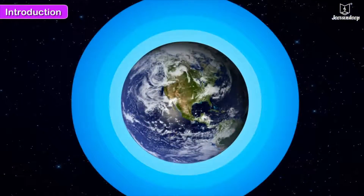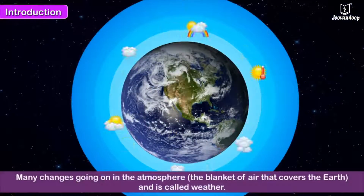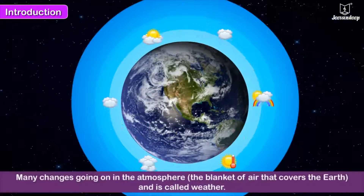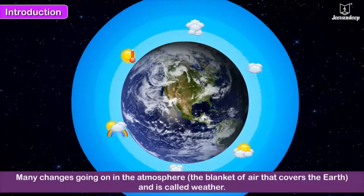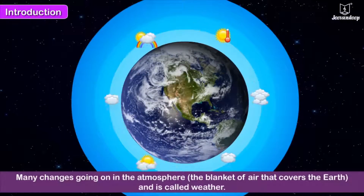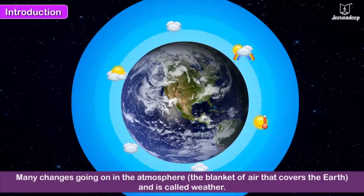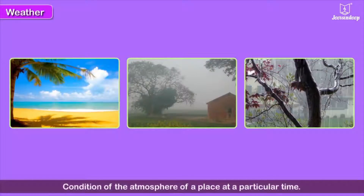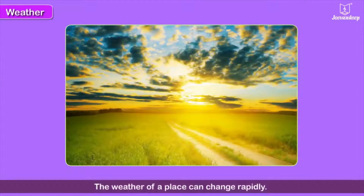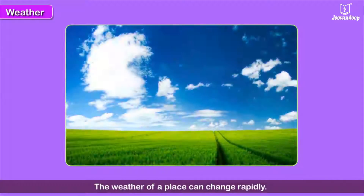All this is a result of many changes going on in the atmosphere — the blanket of air that covers the earth — and is called weather. Weather is the condition of the atmosphere of a place at a particular time. The weather of a place can change rapidly.